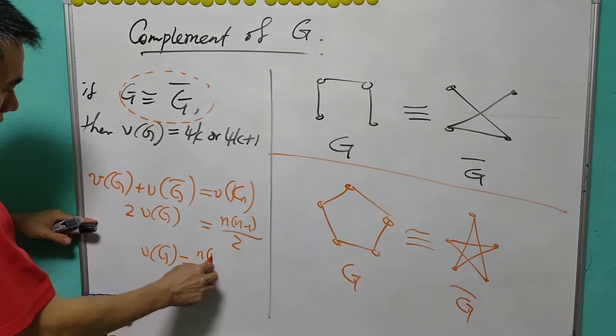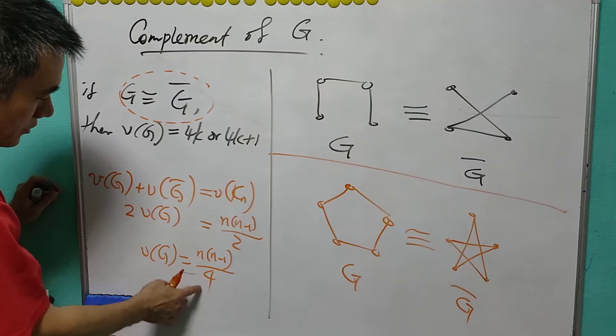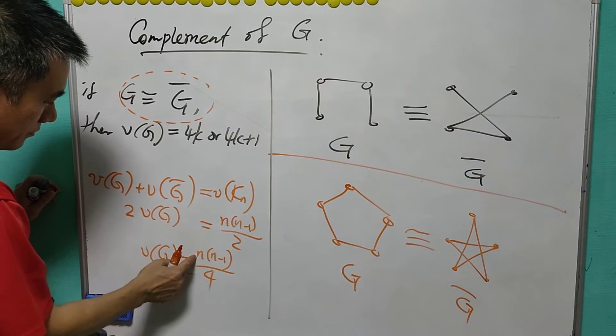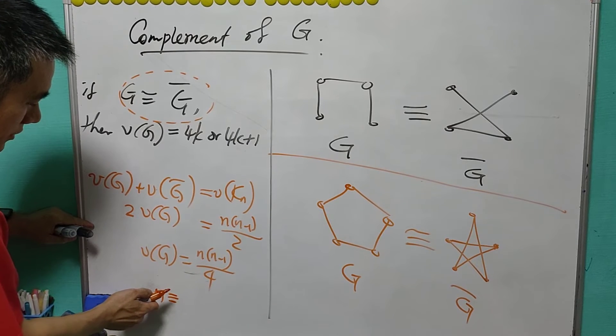Since N and N minus 1 are coprime to each other, this means that either one of them must be divisible by 4. So it means that either N is divisible by 4.